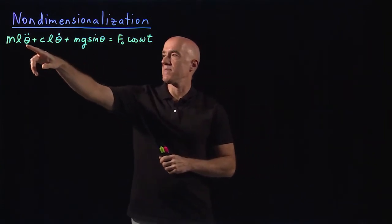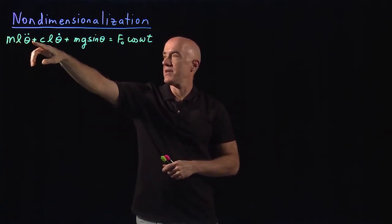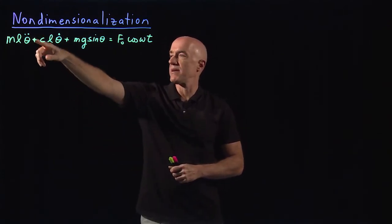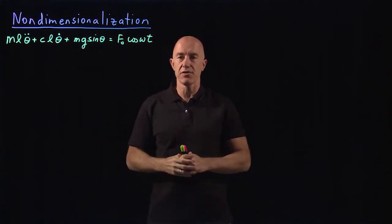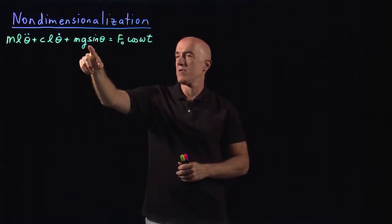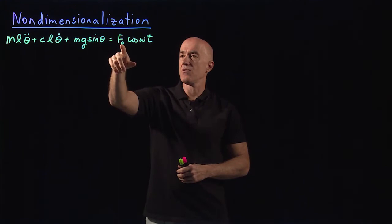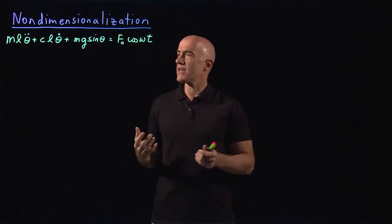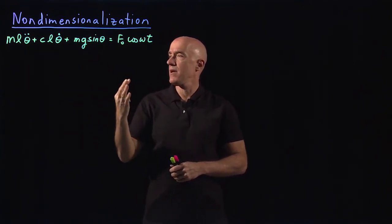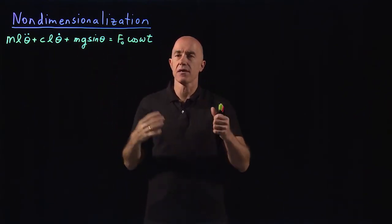If you look at this equation, there's the mass of the pendulum, the length of the rod connecting the mass to the pivot point. There's time — we're taking the second derivative of the angle with respect to time. There's a friction coefficient c, there's gravity — the gravitational acceleration. If you're on Earth it's 9.8 meters per second squared, but maybe you're running an experiment on Jupiter or Mars, so g could be considered a parameter. And then you have an external force with amplitude f₀ and frequency ω. So you have six parameters: m, l, c, g, f₀, and ω.